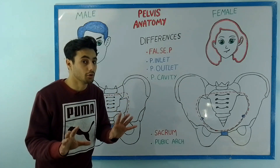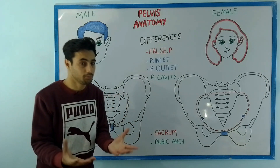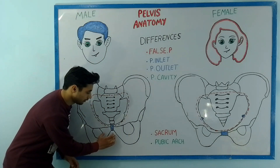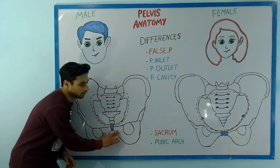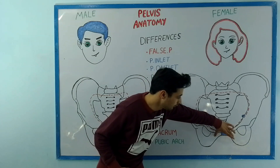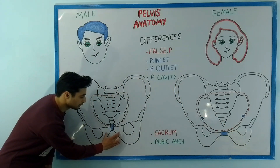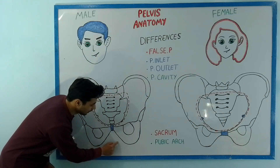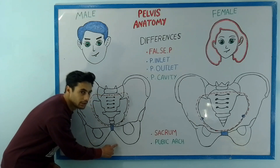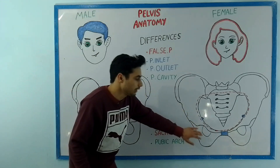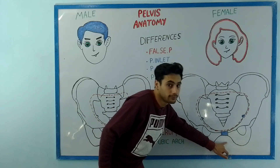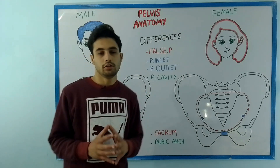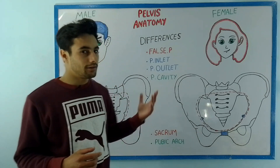In the end, we have to look at the pubic arc or the subpubic angle. What is the subpubic arc or angle? Look in front of the ischiopubic rami of the male pelvis as well as the female pelvis. In front of the ischiopubic rami we have the subpubic angle or the pubic arc. It is less than 90 degrees in case of the male, but if you look at the pubic arc of the female, it is greater than 90 degrees.